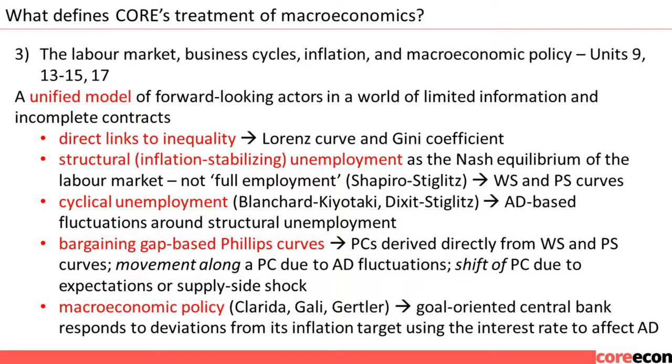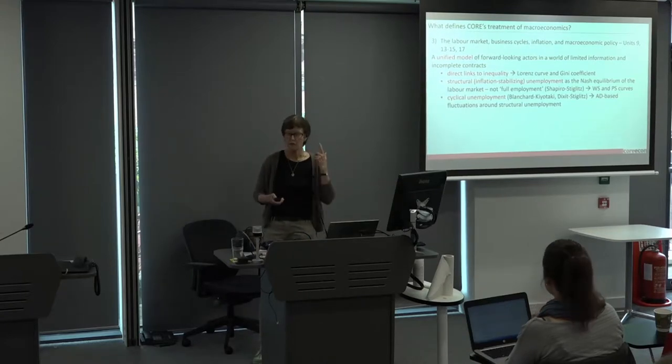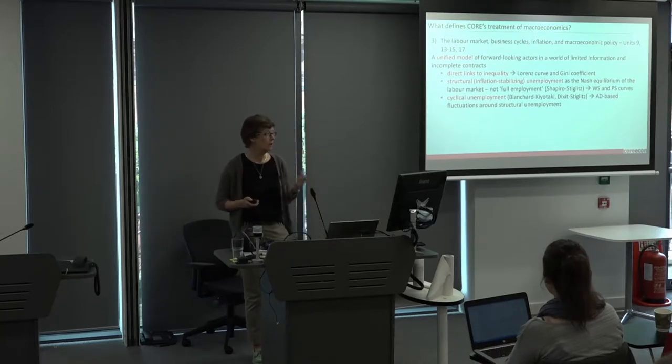This has an advantage of giving us direct links to inequality. We can connect the central model — the diagram of the labour market — with the Lorenz curve and the Gini coefficient. We have a model of inflation-stabilising unemployment presented as the Nash equilibrium of the labour market, where all actors are doing the best they can given what everyone else is doing, so there's no full employment notion. One model of this is Shapiro-Stiglitz, which produces the wage-setting and price-setting curves.